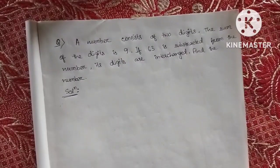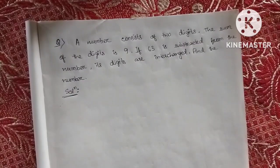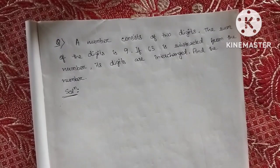Hello friends, I have problems on numbers in the second part. A number consists of two digits. The sum of the digits is 9. If 63 is subtracted from the number, its digits are interchanged. Find the number.